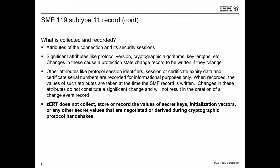Significant attributes collected include protocol version, cryptographic algorithms, and key lengths. Changes to these attributes trigger a state change record. Other attributes such as protocol session identifiers, certificate expiry dates, and certificate serial numbers are included for informational purposes only and do not trigger state change records. Importantly, ZERT does not collect, store, or record any values of secret keys, initialization vectors, or other secret values negotiated as part of the cryptographic protocol handshake.